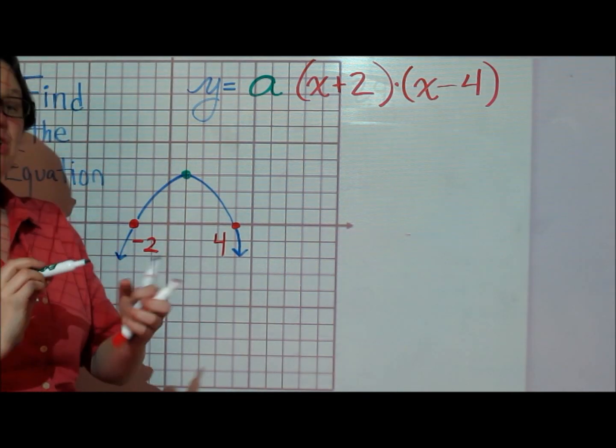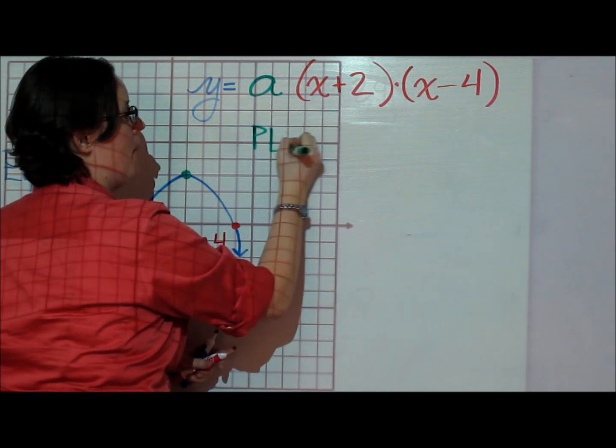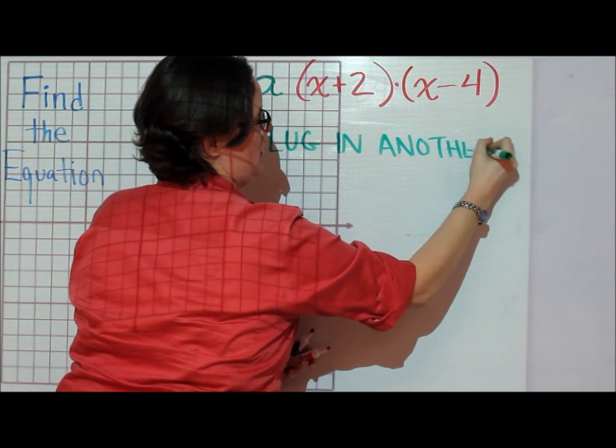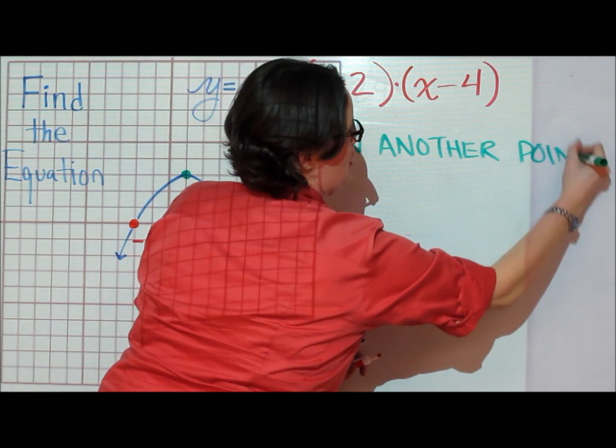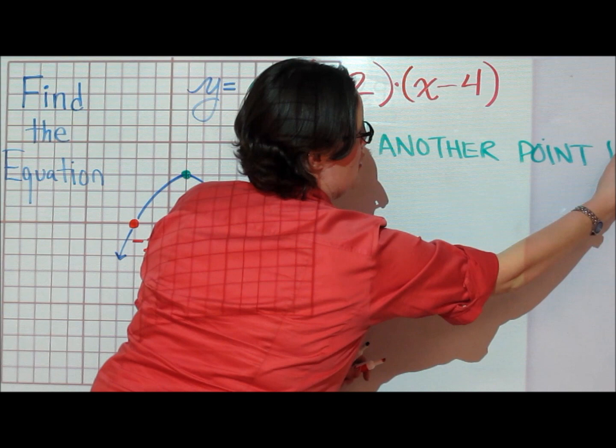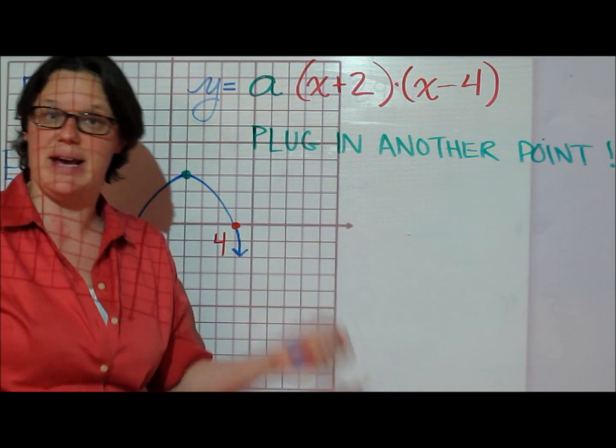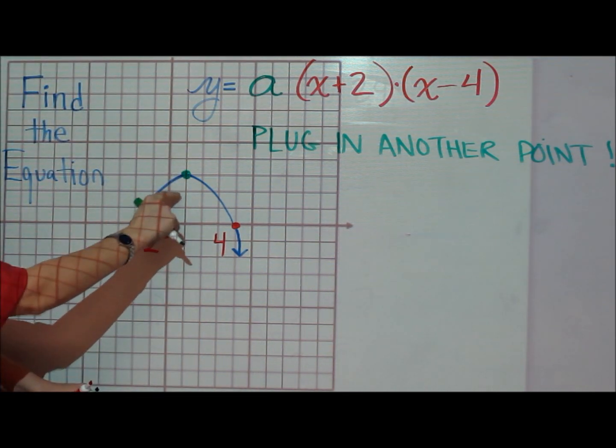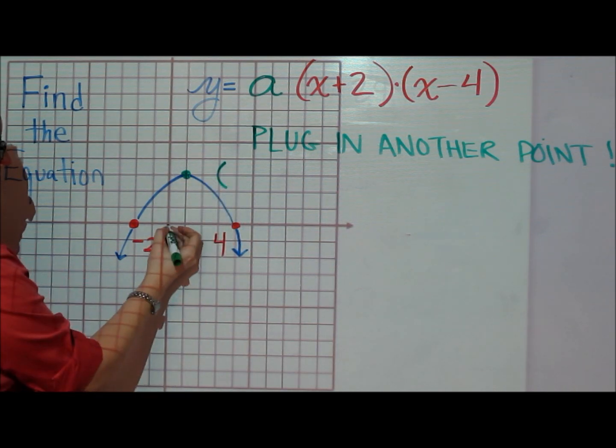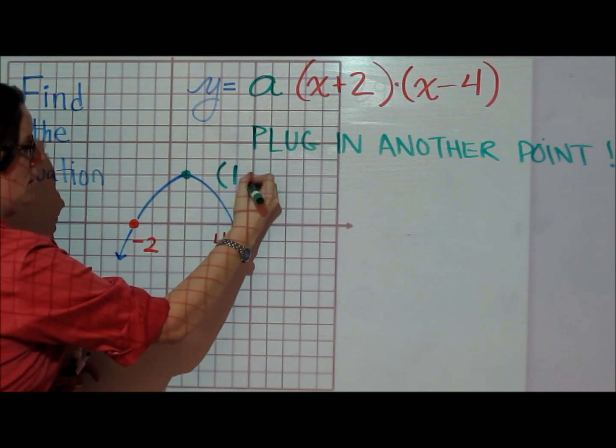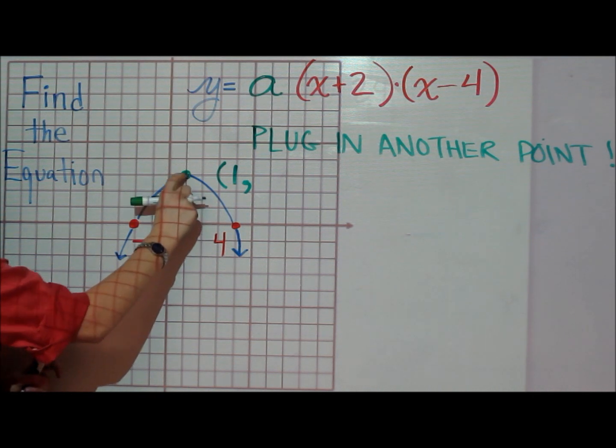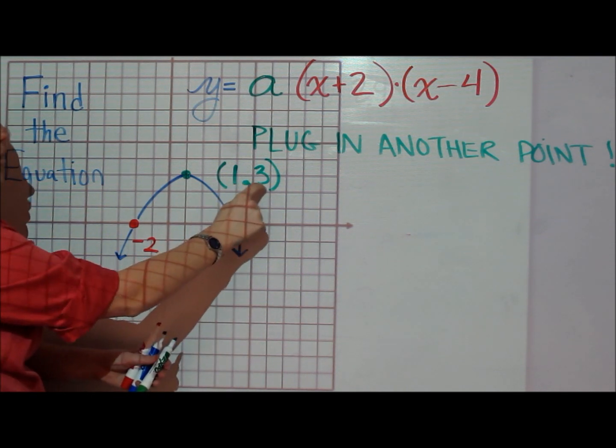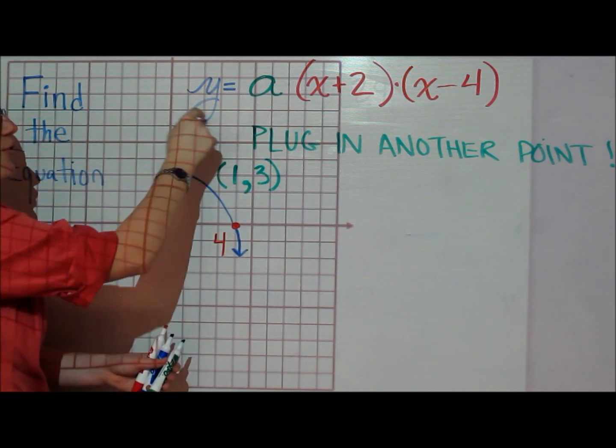The way you find your a-value is that you have to plug in another point. Pick any point that's not an x-intercept and write down its coordinates. For this parabola, I have another point at x is 1, y is 3. That tells me that when x is 1, y should be 3 for this parabola.